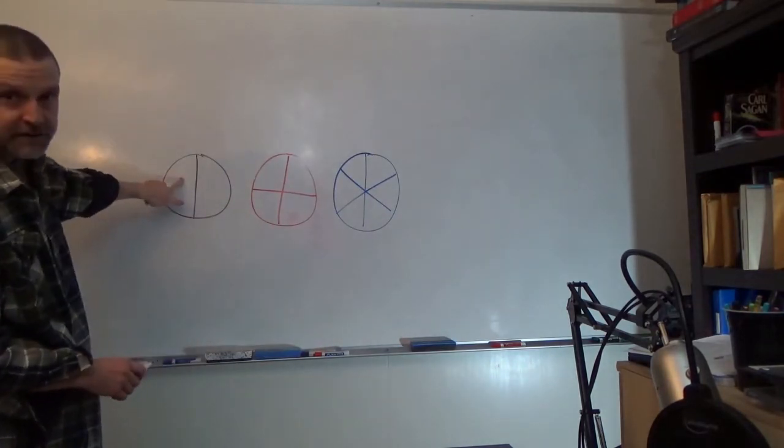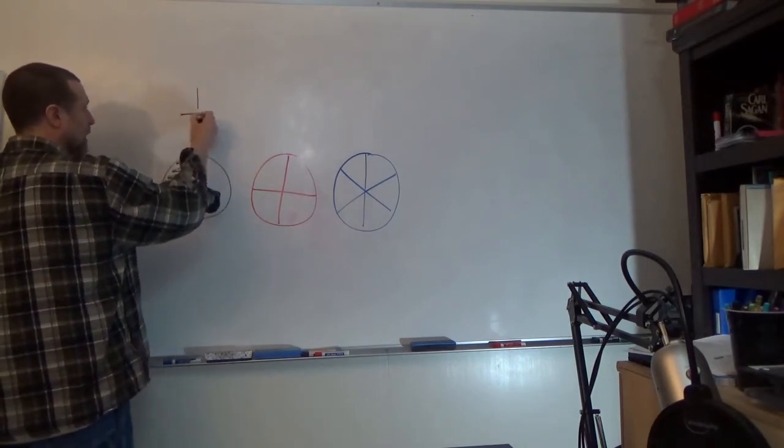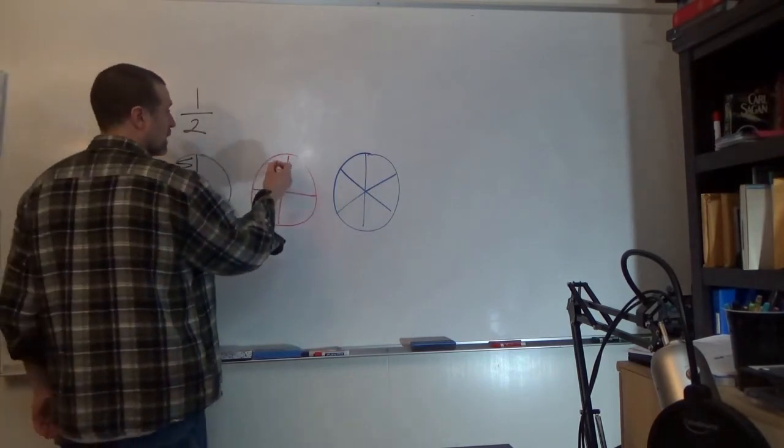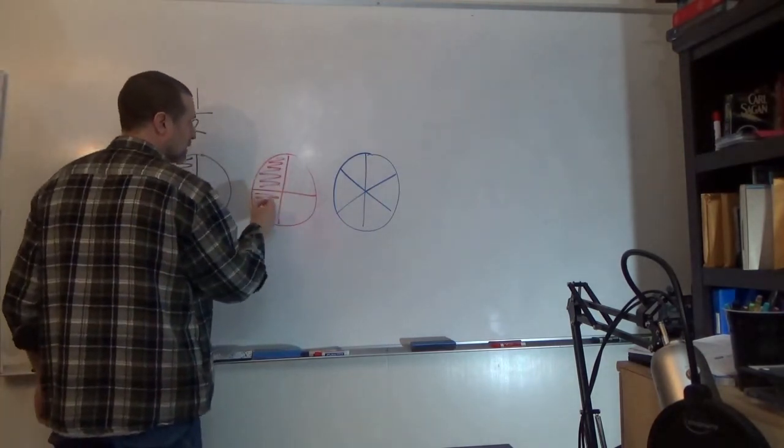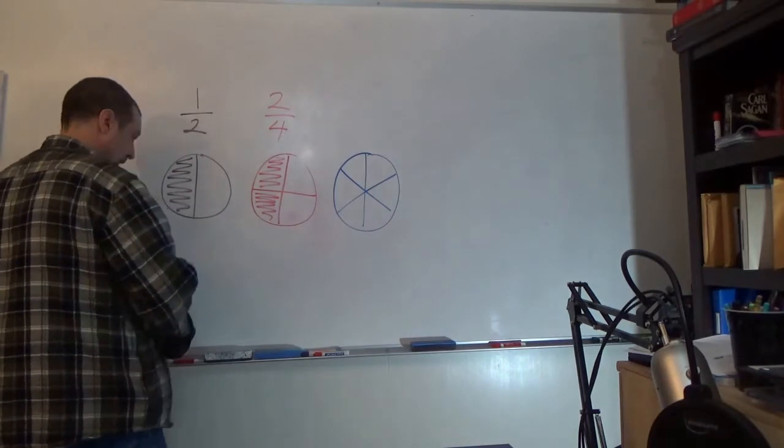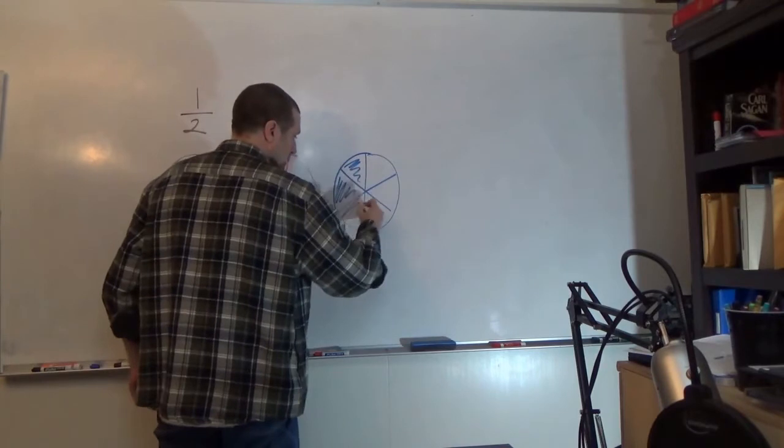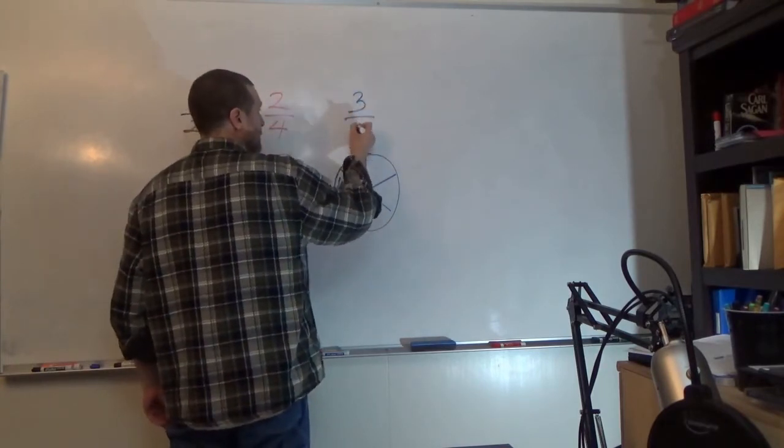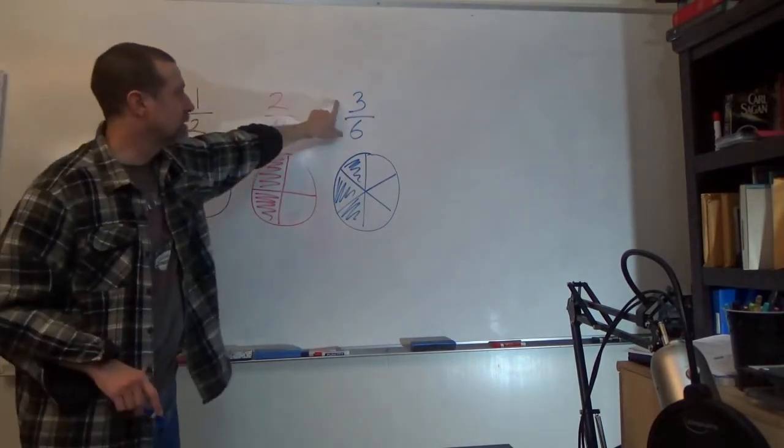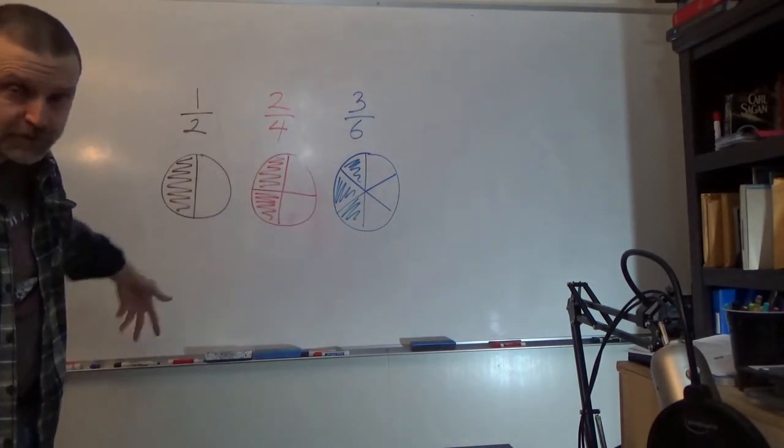Now, if I ate one of these two, I ate one of the two. If I ate two of these four, one, two, or if I ate three, one, two, three, three of those six, we have different fractions, but those fractions refer to the same amount of pizza, or the same amount of an object.